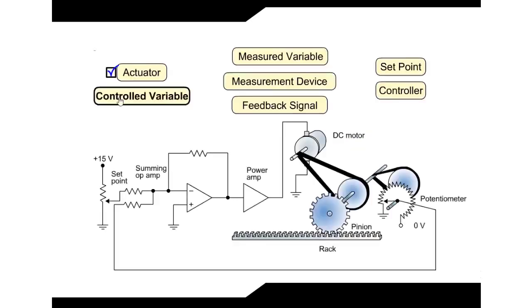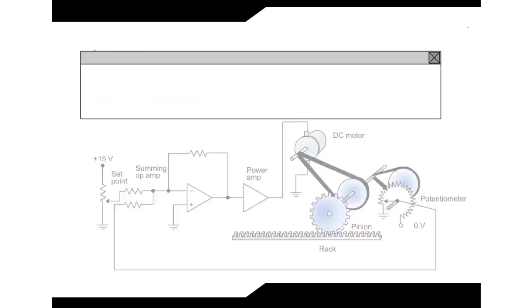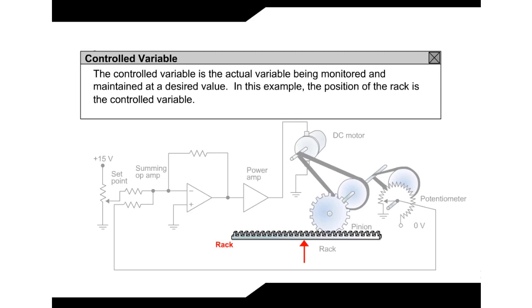Controlled Variable: The controlled variable is the actual variable being monitored and maintained at a desired value. In this example, the position of the rack is the controlled variable.